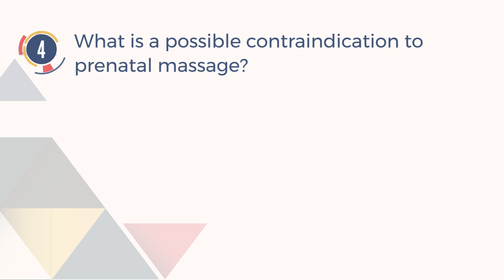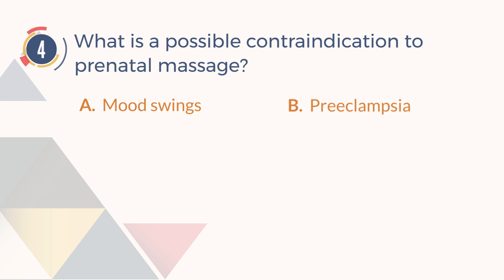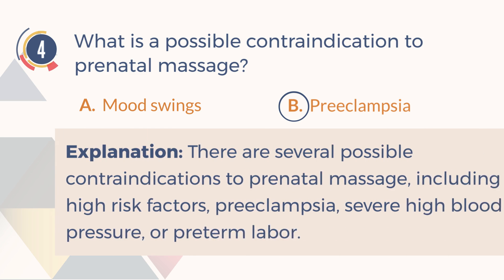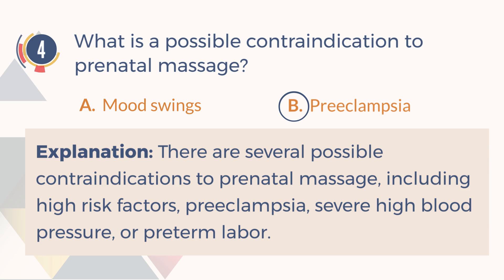Number 4. What is a possible contraindication to prenatal massage? A. Mood swings. B. Preeclampsia. C. Weight gain. D. Back aches. The answer is B, preeclampsia. There are several possible contraindications to prenatal massage including high risk factors, preeclampsia, severe high blood pressure, or preterm labor.